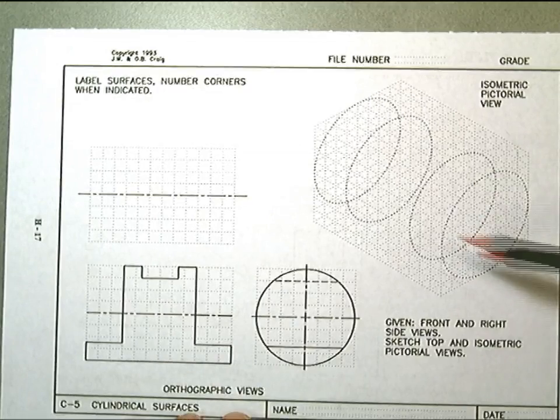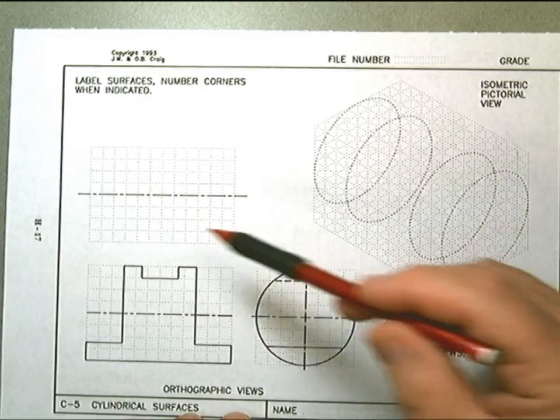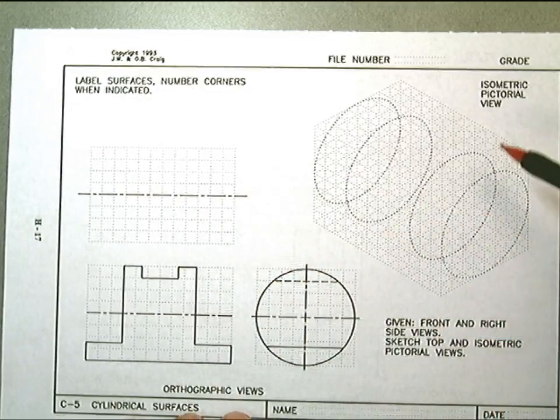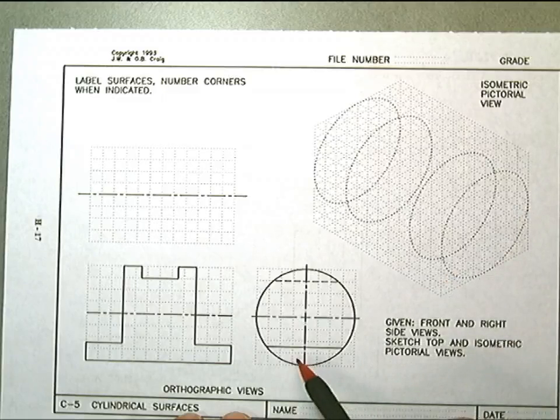C5 requires you to draw the top and the pictorial. This surface here is all the way to the edge, so you would construct that in here.